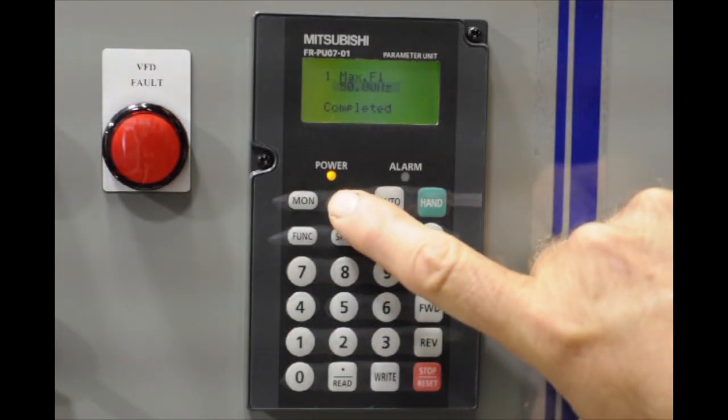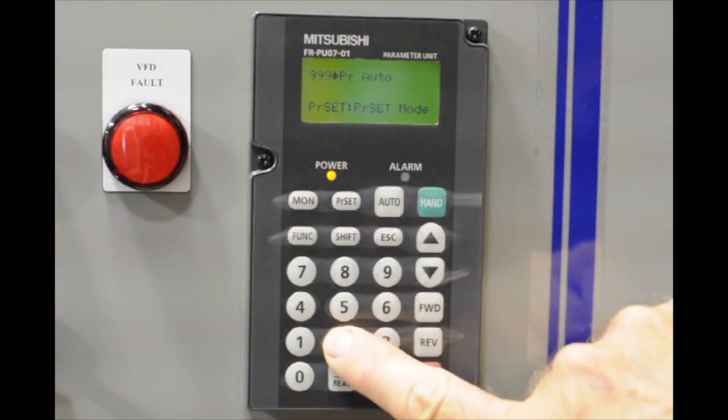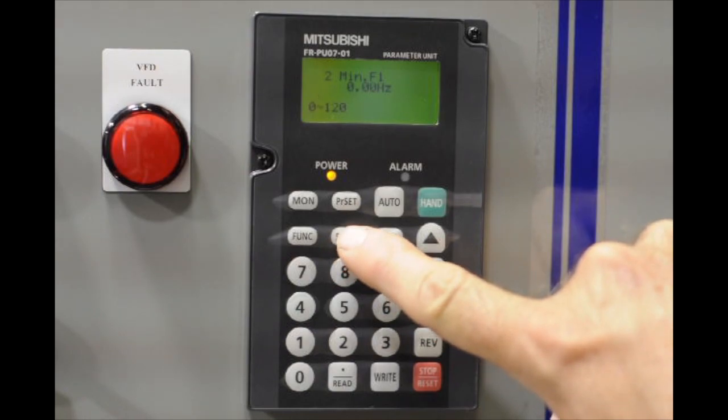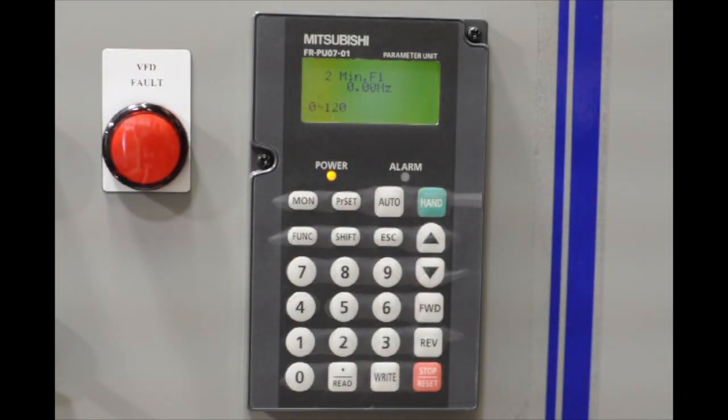There's two ways of doing this. You can either push the PR set button and push two and then read, or you can simply use the shift button, and it will scroll through numerically from low to high.